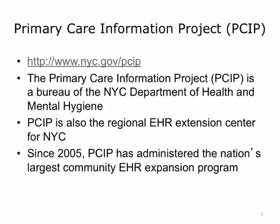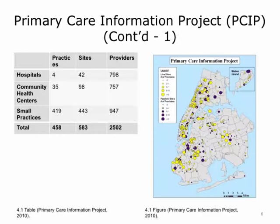One of these groups within the Department of Health is a newly created bureau called the Primary Care Information Project, PCIP, created in 2005. Its goal is to do something meaningful. It has focused during the last five years on administering the nation's largest community electronic health record, EHR, expansion program. If you know something about the Regional Extension Center concept, this is an organization that is helping providers implement electronic health records. Let's now review how the PCIP has been doing.